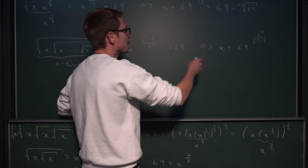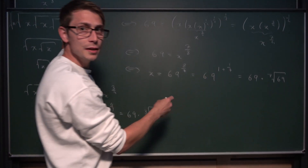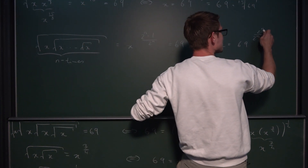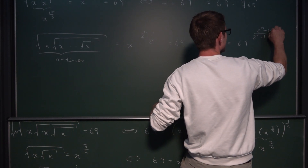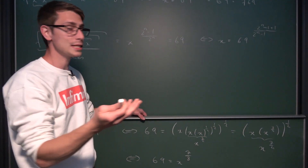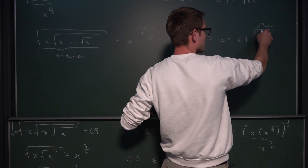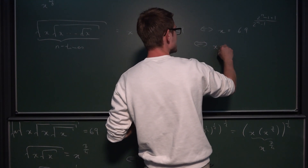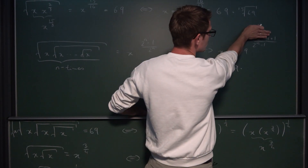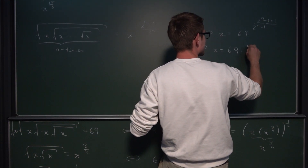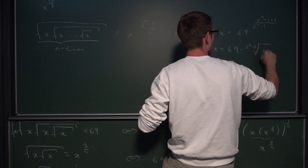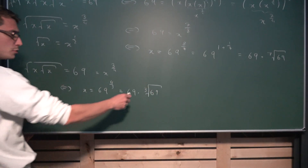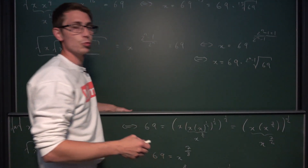The only thing keeping us from splitting up our fraction into two parts is that we don't have the same denominator. We can solve this by adding 1 and subtracting 1 in the numerator — adding 0 doesn't change anything. Now we can break the whole thing up: we get the first part with (2^n − 1) divided by (2^n − 1), which coincidentally cancels to 1 — that preserves our 69. So we get x equal to 69 times 69 to the 1 divided by (2^n − 1), which is the same as the (2^(n−1))th root of 69. This coincides with our earlier solutions.